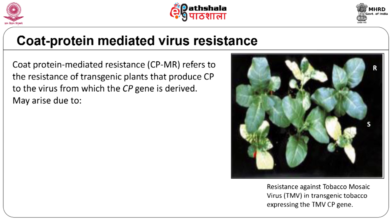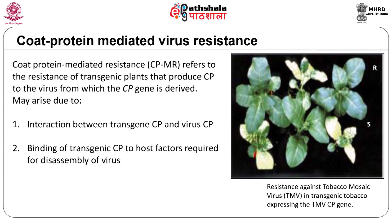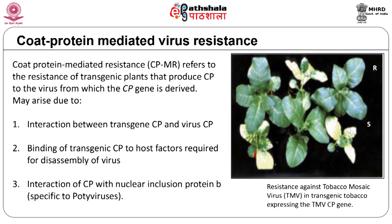Examples include potato mosaic virus CP gene expressed in transgenic potato, TMV CP gene expressed in tobacco, and papaya ringspot virus CP gene expressed in transgenic papaya. CP gene-mediated resistance has been widely used. One possible mechanism is that the CP synthesized by the transgene is capable of subunit-subunit interaction with the coat protein during disassembly of the challenging virus, which may ultimately prevent binding of ribosomes to the RNA of the invading virus.